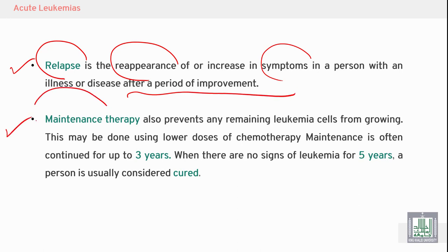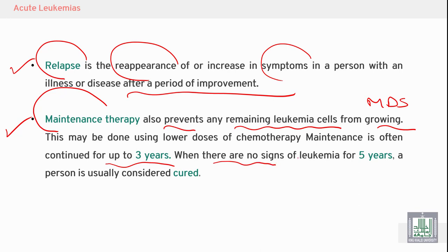Maintenance treatment prevents the remaining leukemic cells from growing, to prevent relapse and recurrence. This may be done using lower doses of chemotherapy. Maintenance is often continued for up to three years, and when there are no signs of leukemia for five years, the condition can be called cured.